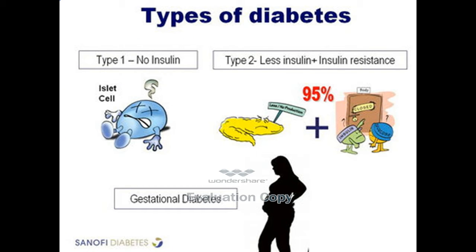So broadly looking at the types of diabetes, there are many types but broadly we can classify them as type 1, type 2, or gestational. We will not look at gestational diabetes because this is the diabetes associated with pregnancy. When you look at type 1 diabetes, there is absolutely no insulin being produced by the body. The cell located in the pancreas which produces insulin is not able to produce any insulin. Type 1 diabetes accounts for about 5–10% of total diabetic patients, and these patients are usually lean and slim, depend on insulin for survival, and are usually less than 35 years of age.